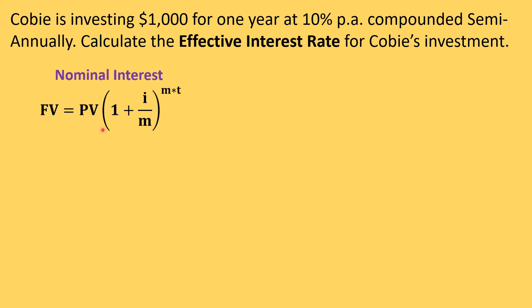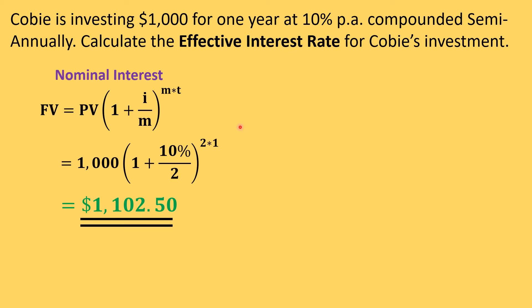We can take the future value equation and convert it to nominal format: FV = PV × (1 + i/m)^(m×t), where m is the compounding frequency, i is the interest rate per annum, and t is the time period. Substituting in the values, the final investment value for Kobe at the end of one year equals one thousand one hundred and two dollars and fifty cents.